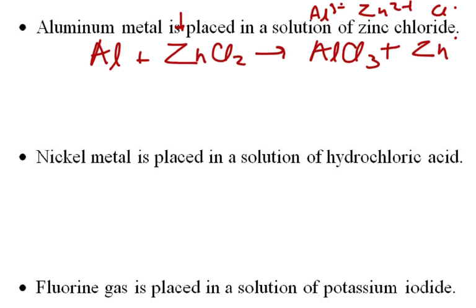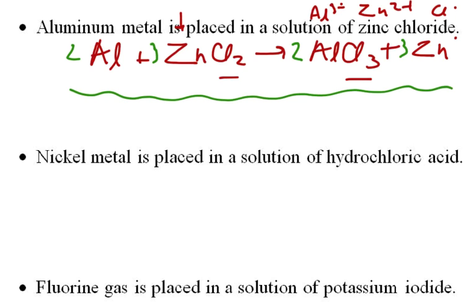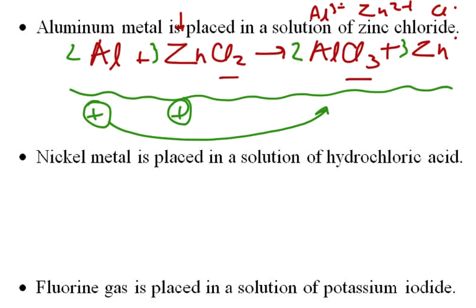We have three chlorides on the right and two chlorides on the left, so we balance by putting a 2 in front of AlCl₃ and a 3 in front of ZnCl₂. Now we have three zincs, three zincs, two aluminums, two aluminums — that is our balanced equation. Aluminum turns into a positive ion, so it replaces the positive zinc ion; aluminum goes from neutral to positive and zinc goes from positive to neutral.